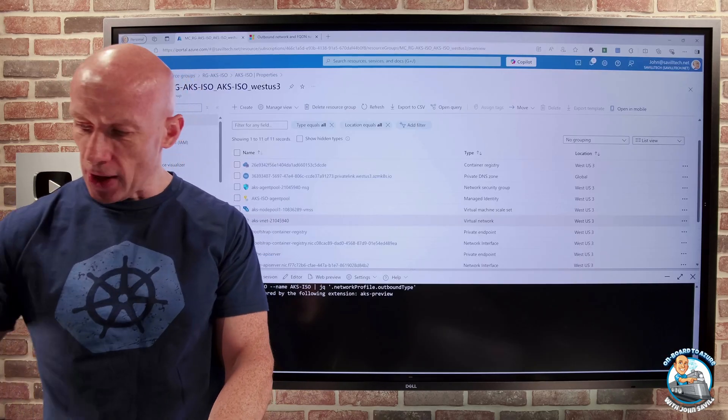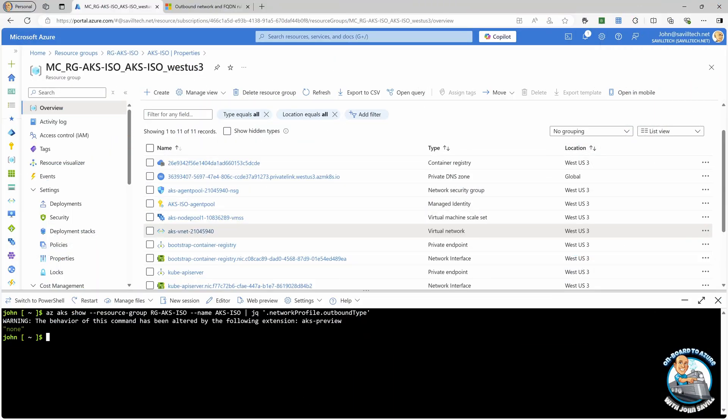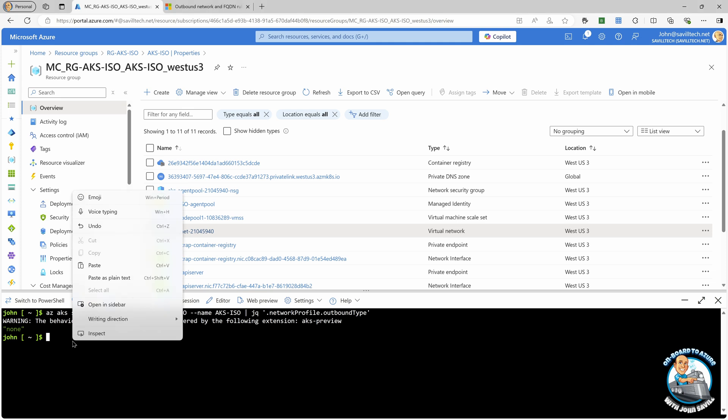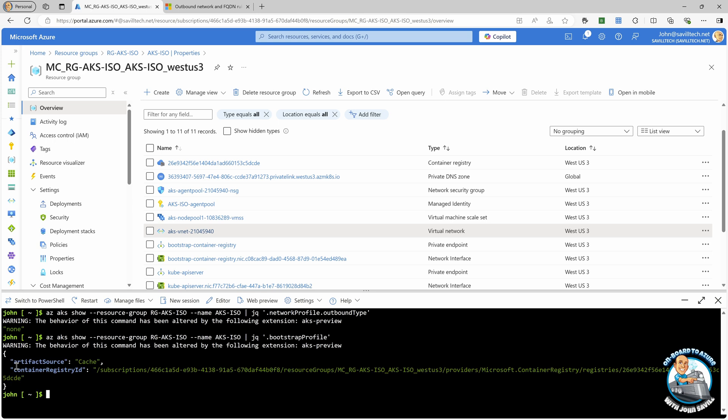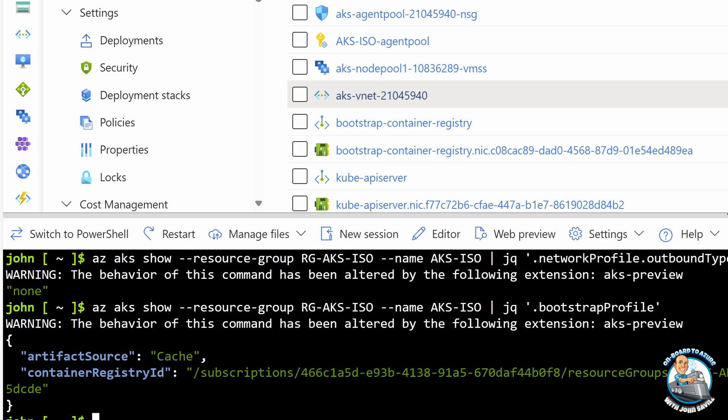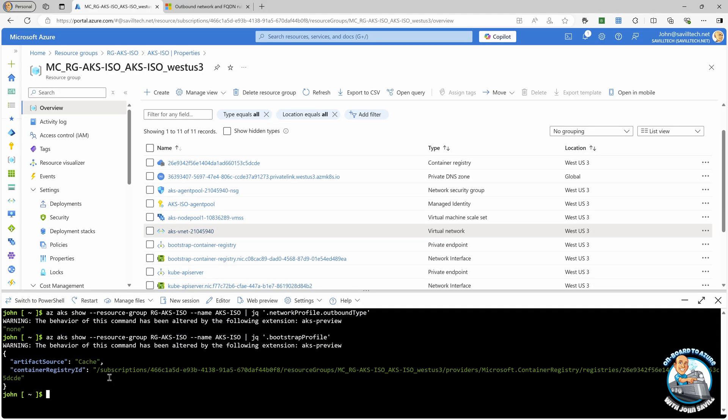And once again, if we jump over, if we go and look, if we just run another command, and let's look at my configuration for the bootstrap profile, we can see sure enough, my artifact source is cache, and it's talking to a particular container registry ID. Now, in my case, and you have a choice here, I configured it to be a managed Azure Container Registry instance.